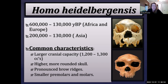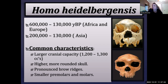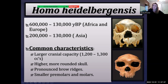Homo heidelbergensis is a mosaic of Homo erectus, Homo neanderthalensis, and Homo sapiens type features. There's another jump in cranial capacity — the range is about 1,200 to 1,300 cc, really beginning to approach modern cranial capacity. However, the shape of the crania is quite different from Homo sapiens. We see a slightly higher, more rounded skull than in Homo erectus, but still a relatively long, low cranial vault. There are very pronounced double-arched brow ridges — the supraorbital torus — and smaller premolars and molars, indicating a more omnivorous, generalized diet.